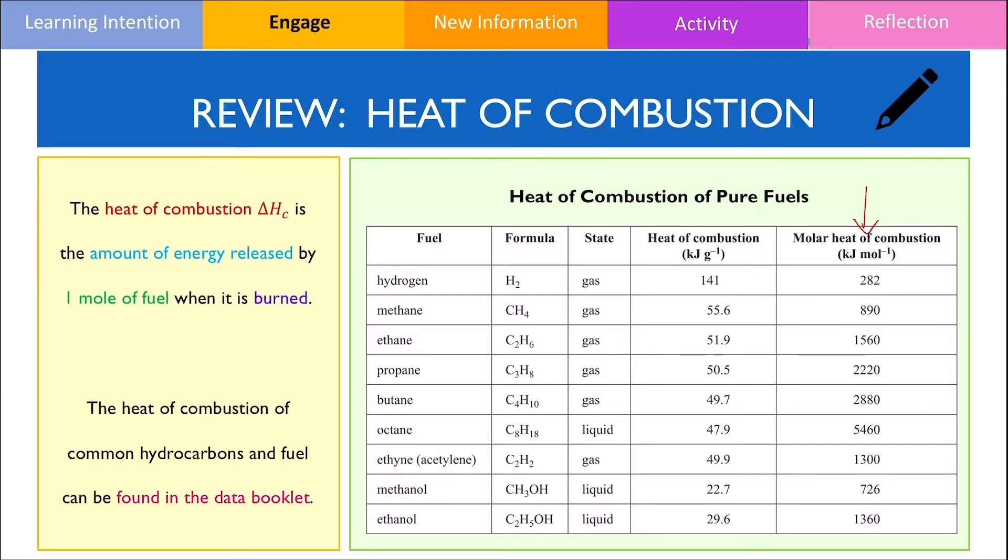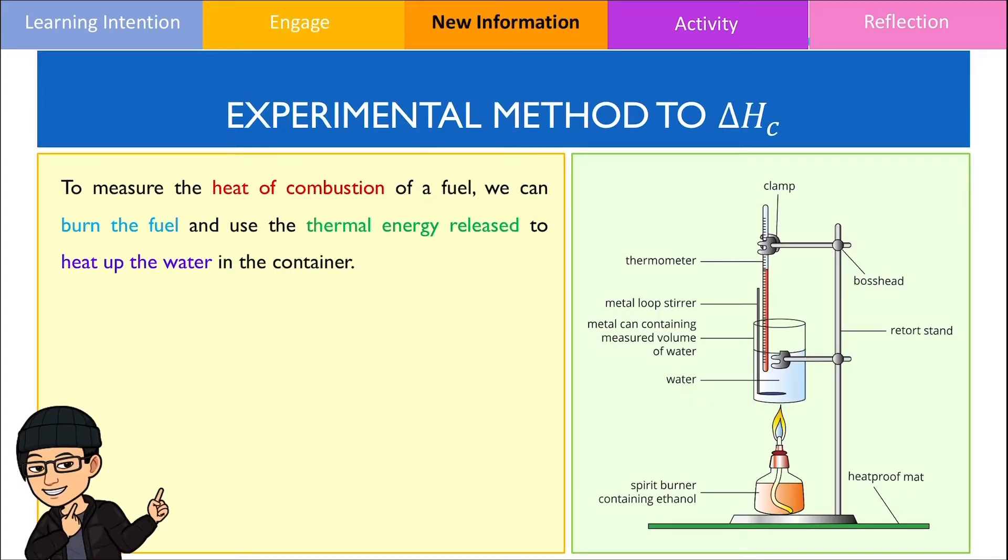In this video, I want to show you an experimental method to find the heat of combustion and you'll understand why this experimental value will be different compared to the values recorded in the data booklet. The heat of combustion can be found experimentally using an instrument called a calorimeter which has the following setup as shown on the right hand side.